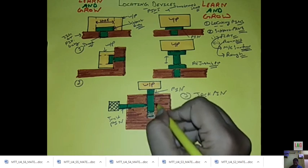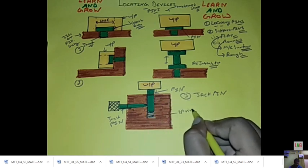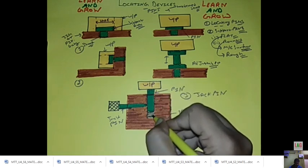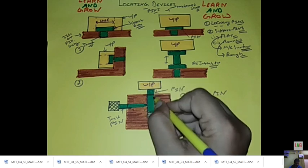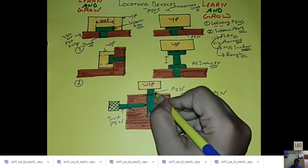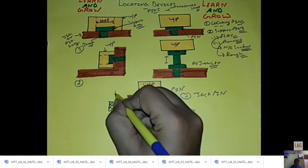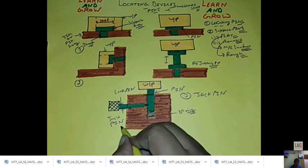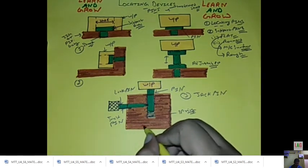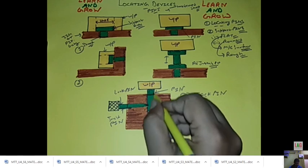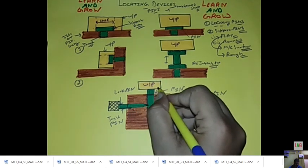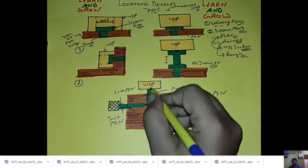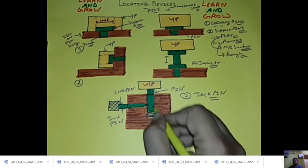The third type is the jack pin. The jack pin can be adjusted and locked at the required position. It works by a locking mechanism — once locked, it supports the workpiece surface even if the surface is rough. This is the jack pin and its locking-unlocking mechanism.